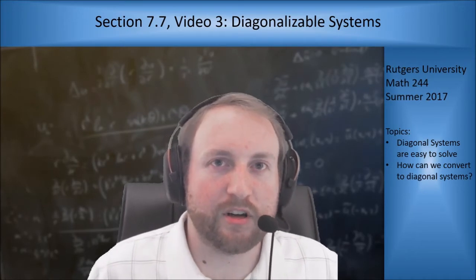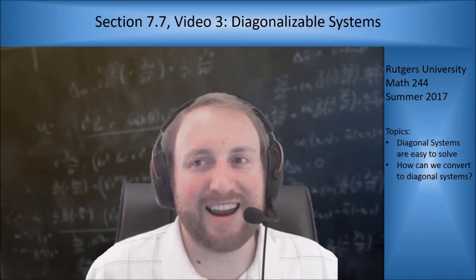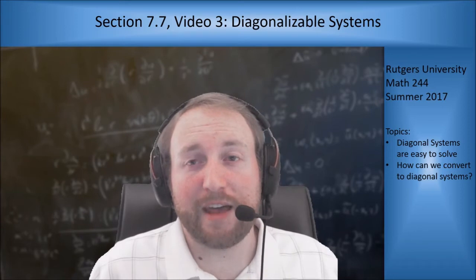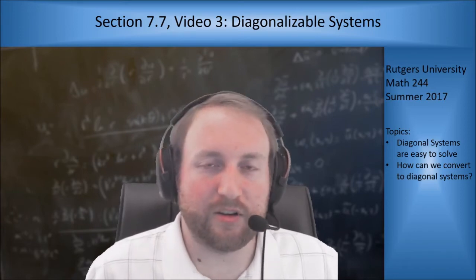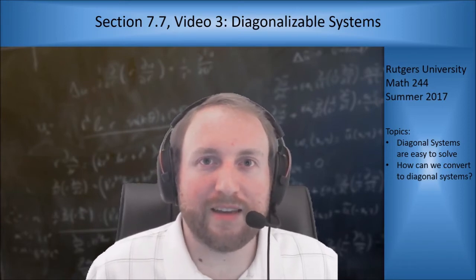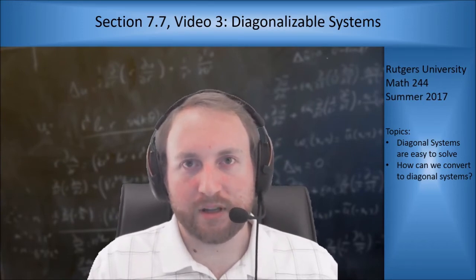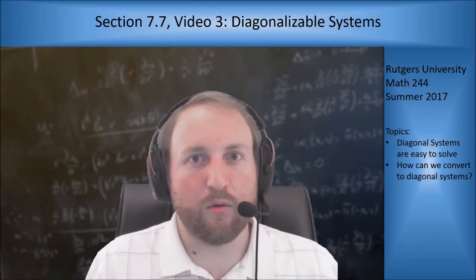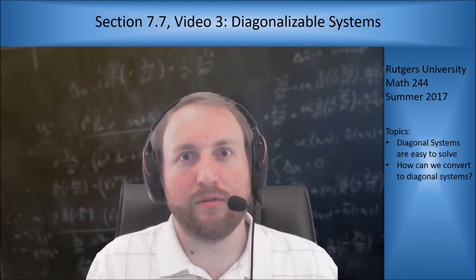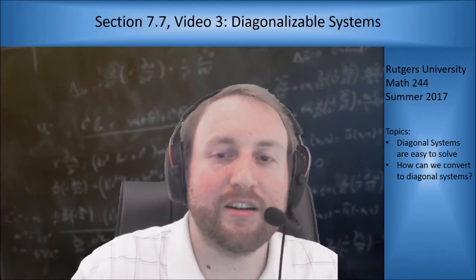Hey everyone. Welcome to the next video from section 7.7. In this video we're talking about something a little bit different: diagonalizable systems. I'll define what that means in the course of the video. The idea is that if I have a matrix that's diagonal and I try to solve it, it's really easy to do. So if that's really easy, what if we can make things diagonal? That's what we'll analyze in this video.